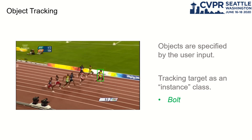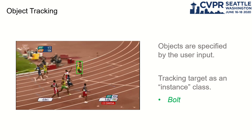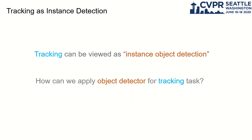For example, the Bolt class in this video. If we consider each tracking target as a category, the tracking task can be viewed as an instance object detection problem. So it's natural to ask whether it's possible to apply an object detector to solve the tracking problem.